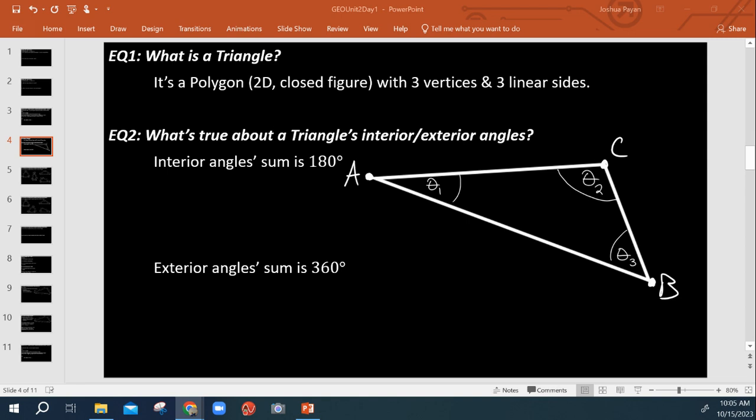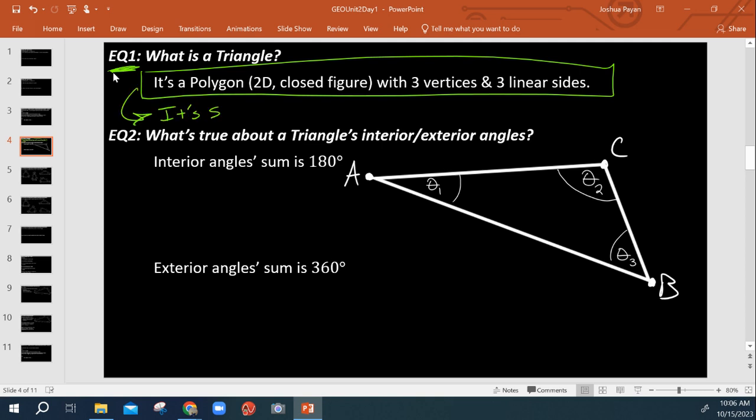All right, so in this quick video, I'm briefly going to discuss just the basics of triangles and what they are. So first off, what is a triangle? Well, in plain English, it's a polygon with three vertices and three linear sides. And we should also note it's the simplest possible polygon.